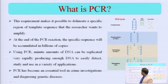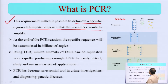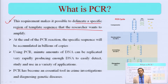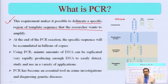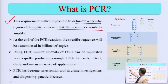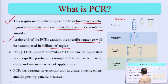This technique makes it possible to delineate a specific region of a template sequence that the researcher wants to amplify. DNA sequencing is very costly work and will take a huge amount of money. But for a certain disease, if you have a suspicion that a certain area of the gene is responsible, you can study that particular segment. At the end of the PCR reaction, this specific sequence will be accumulated by billions of copies.